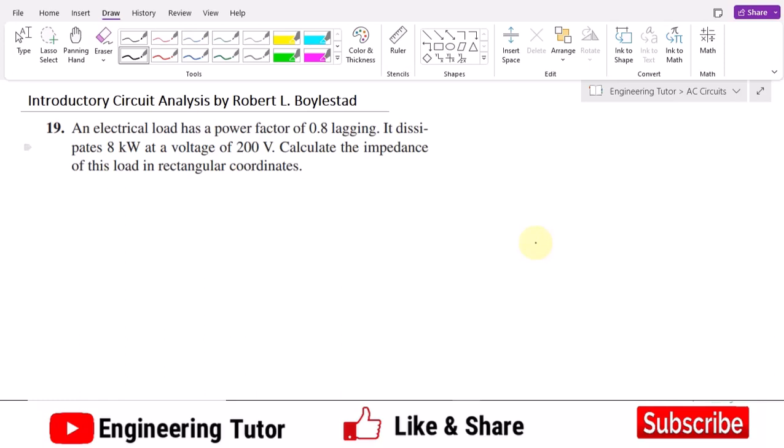Welcome back guys, this is question number 18. Here we are asked that an electrical load has a power factor of 0.8 lagging. It dissipates 8 kilowatts at a voltage of 200 volts. Calculate the impedance of this load in rectangular coordinates.